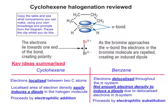I've highlighted the important language you need to use when describing the two differences. Electrons are localised in cyclohexene, but delocalised throughout the pi system in benzene. The localisation in cyclohexene leads to an area of high electron density that can easily induce a dipole in the halogen, as you can see from the diagram. In benzene this just doesn't happen, because the delocalised electrons in the pi system are not electron-dense enough — there's not enough of them in one place to induce a dipole easily.